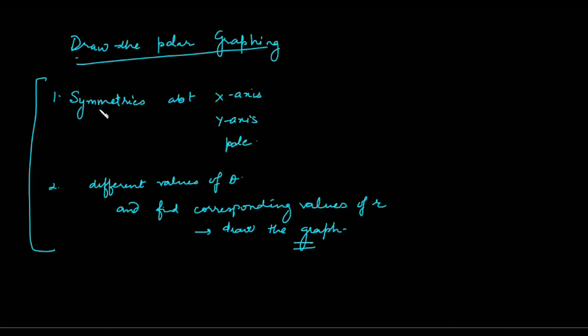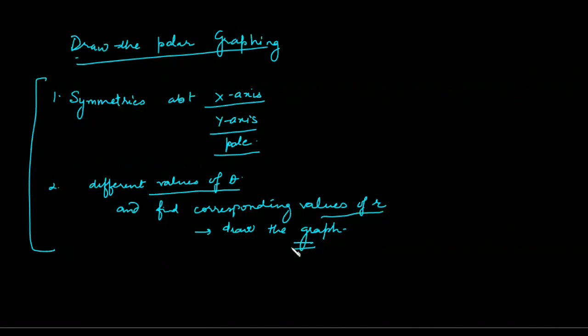We first check the symmetry about each axis. Then we consider different values of theta and find out the corresponding values of r. And then we plot the graph.